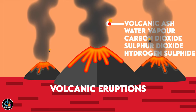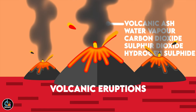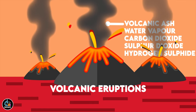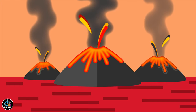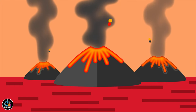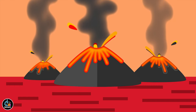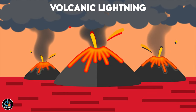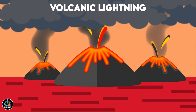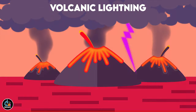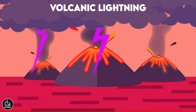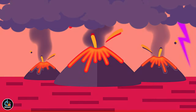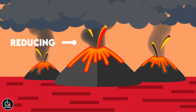The particles of volcanic ash used to collide and resulted in development of electrical discharge, causing volcanic lightning. The gases released from these eruptions formed the early atmosphere, which was reducing in nature due to the presence of reducing gases.